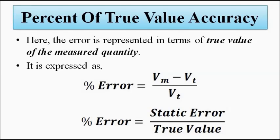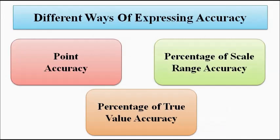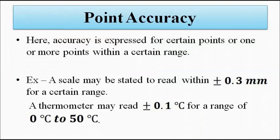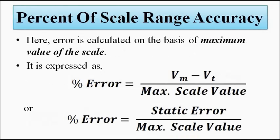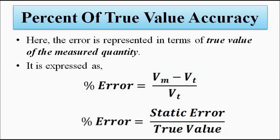So whenever we encounter accuracy, two things are important: the error, and the method of representing that accuracy. We have discussed the different ways of representing or specifying the accuracy of a measurement system: point accuracy, percentage of scale range accuracy, and percentage of true value accuracy. I hope you liked this video. Please subscribe to Engineering Tutorial for more videos related to electrical, electronics, instrumentation, and communication engineering.